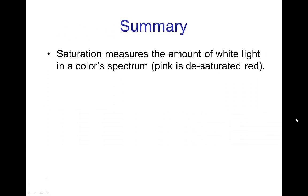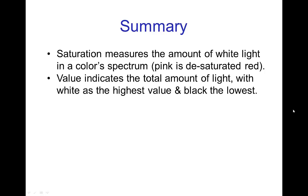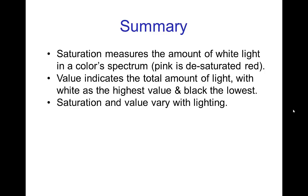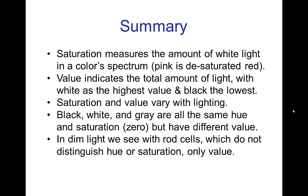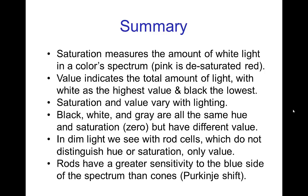In summary: saturation measures the amount of white light in a color spectrum — so pink would be a desaturated version of red. Value indicates the total amount of light, with white being the highest value and black the lowest. Saturation and value vary with lighting conditions. Black, white, and grey are all the same hue and zero saturation, but just different levels of value. In dim light we see with the rod cells, which do not distinguish hue or saturation — they only see value. And finally, the rods have a greater sensitivity to the blue side of the spectrum than the cones, so it's not the same as seeing in grayscale — there's a noticeable shift.